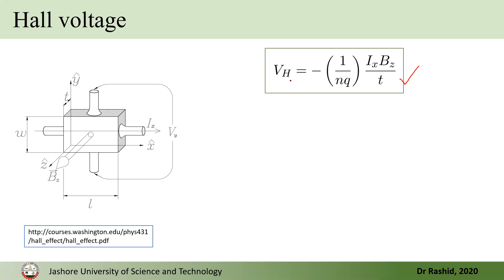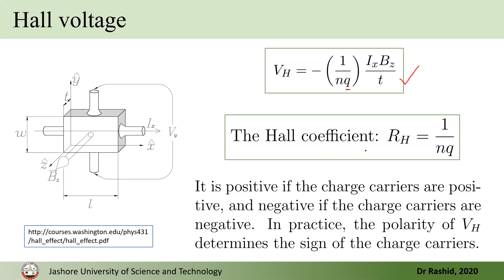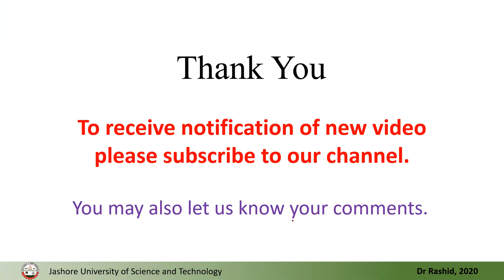From the polarity of the Hall voltage, we can find out the type of charge carrier. The term in parentheses is called the Hall coefficient. If Q is positive, the Hall coefficient is positive; if Q is negative, the Hall coefficient is negative. In practice, the polarity of the Hall voltage can be measured by a multimeter, and from that we can determine which charge carriers are dominating in that material. That's all for today, thank you.